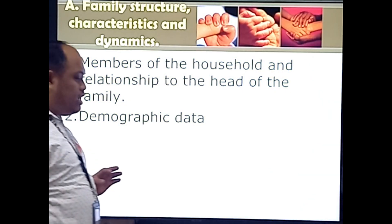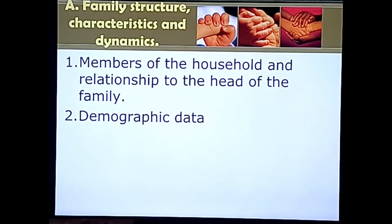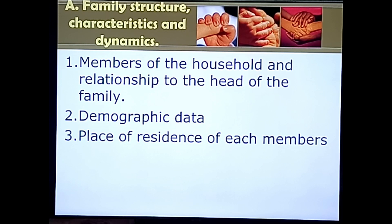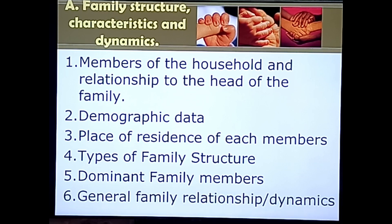Demographic data includes age, sex, and civil status. You also note position in the family — whether head of family, wife, daughter, son — and the place of residence of each member. Also included are the types of family structure, dominant family members, and the general family relationship and dynamics.